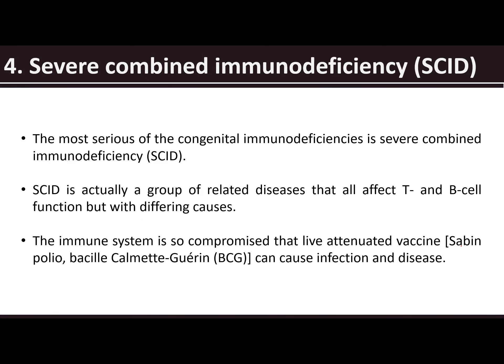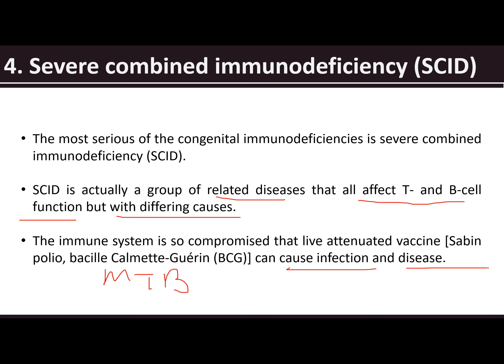We also have SCID — severe combined immunodeficiency — the most serious of the congenital immunodeficiencies. SCID is actually a group of related diseases affecting T and B cell function with differing causes. The immune system is so compromised that live attenuated vaccines from polio (Sabin) and even BCG (Bacille Calmette-Guérin) for MTB could cause infection and disease.